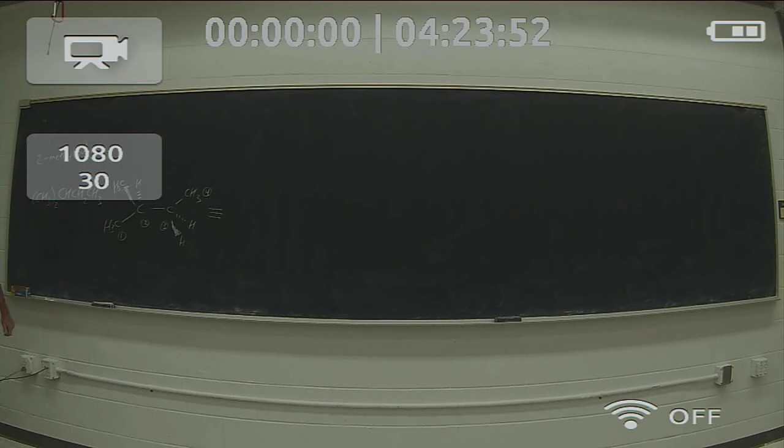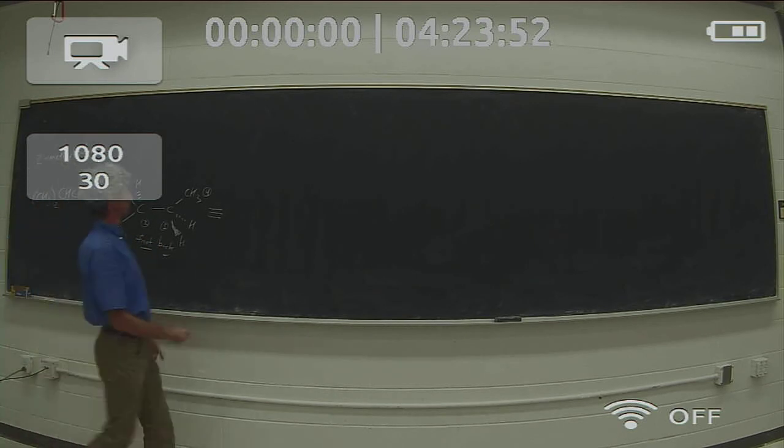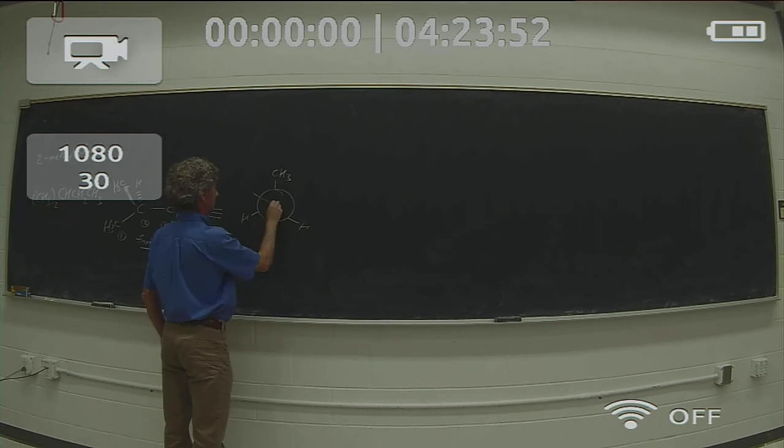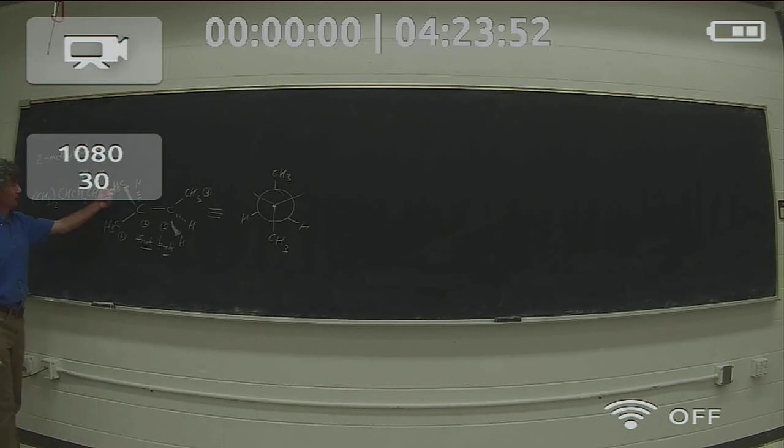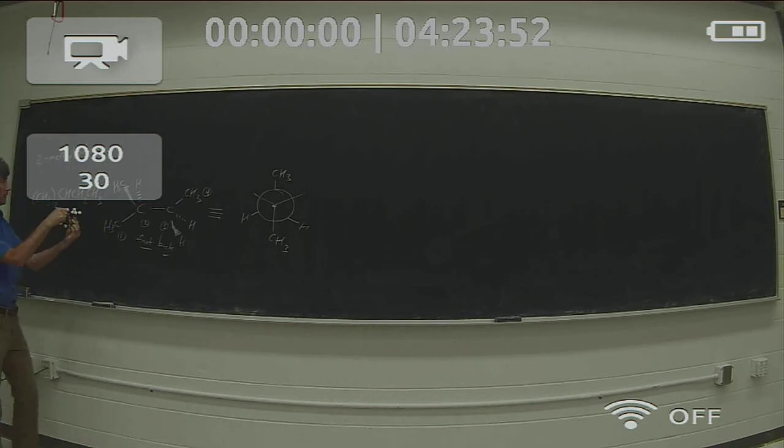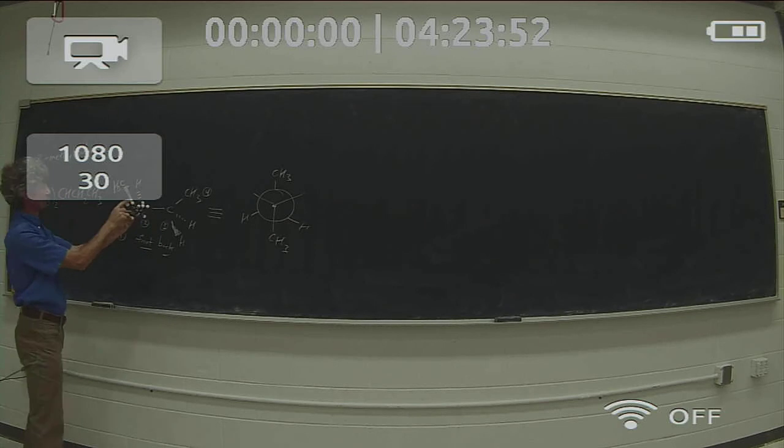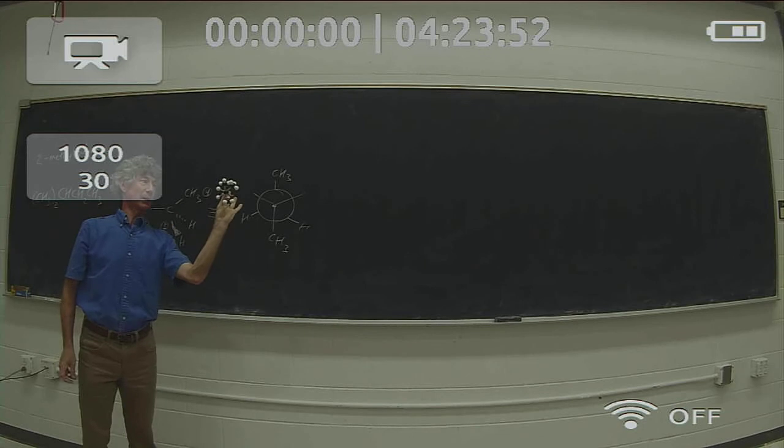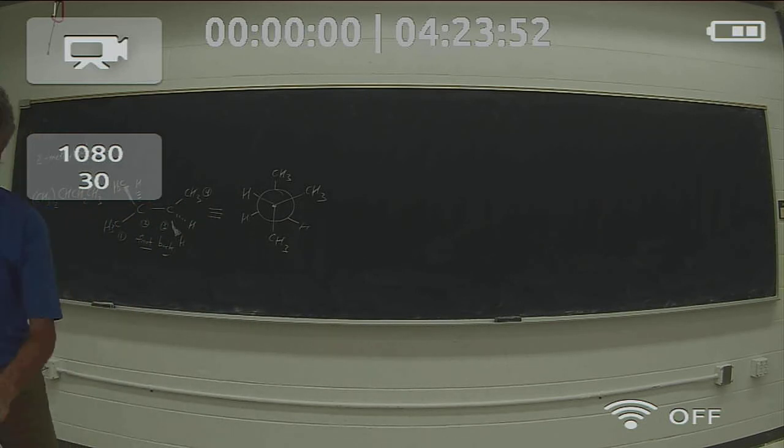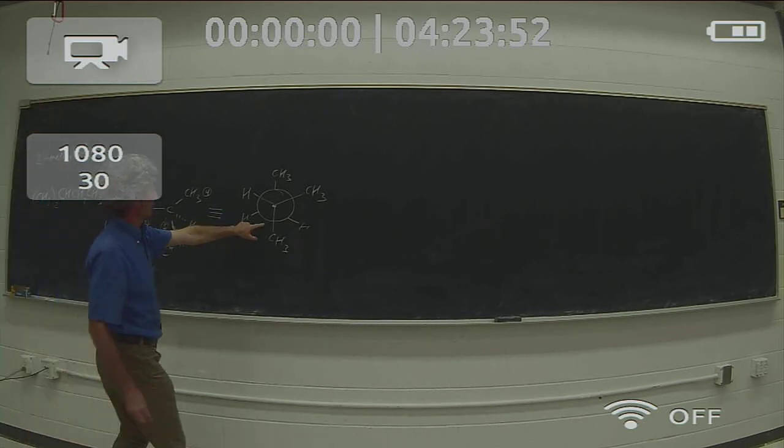I can convert that to a Newman projection, making carbon 2 to the front and carbon 3 to the back. I'm going to fill my back carbon, CH3 group pointing up. On my front carbon, this methyl group, when I rotate this molecule like that. Looking at this molecule, I've got my methyl group pointing up over here. This methyl group is coming out of the plane. When I rotate it, the CH3 group is coming over here on the right. This symbol, which is the mathematical symbol for equivalent to, tells me that this Newman projection is of this molecule.